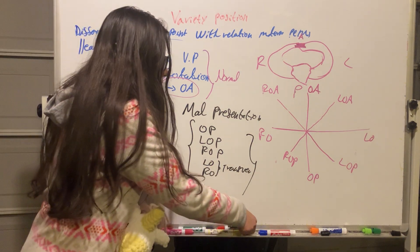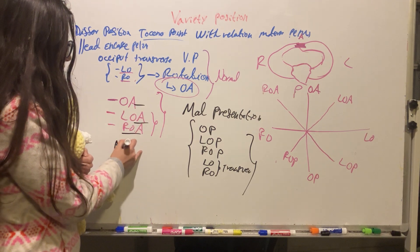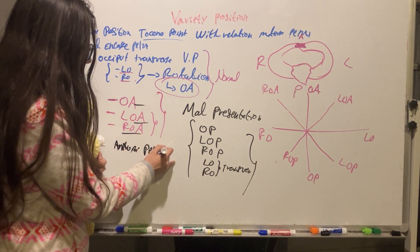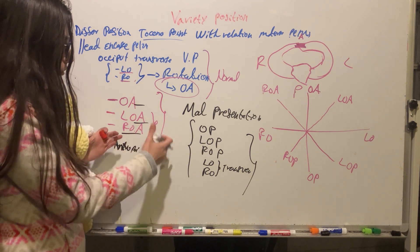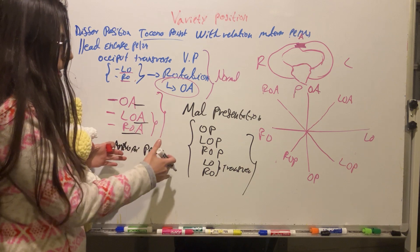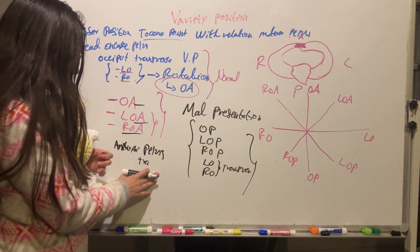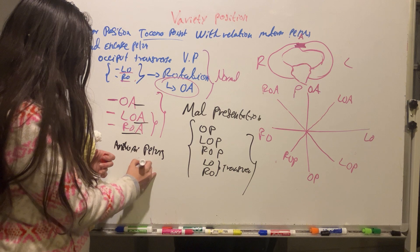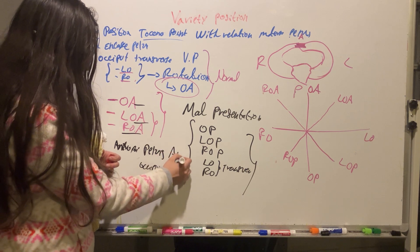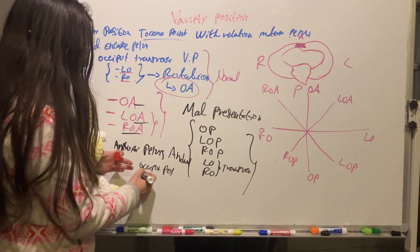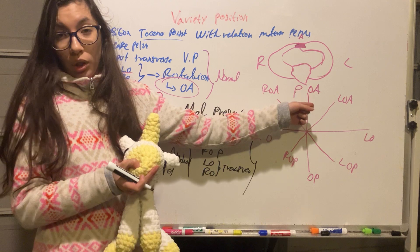This is important because, for example, if a woman has an android pelvis, the head engages in an occiput posterior position. In an android pelvis, the variety of position is occiput posterior instead of occiput anterior — this is not good.